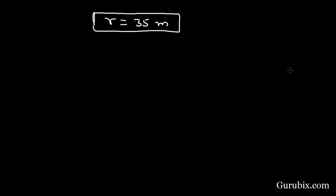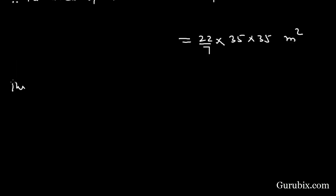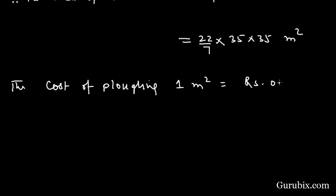Now the field is to be plowed, so we need to calculate the area of the circular field. The area of the circular field will be πr². We have pi equals 22 over 7 and r equals 35 meters, so r squared is 35 times 35 meter square. The cost of plowing 1 meter square is rupees 0.50.